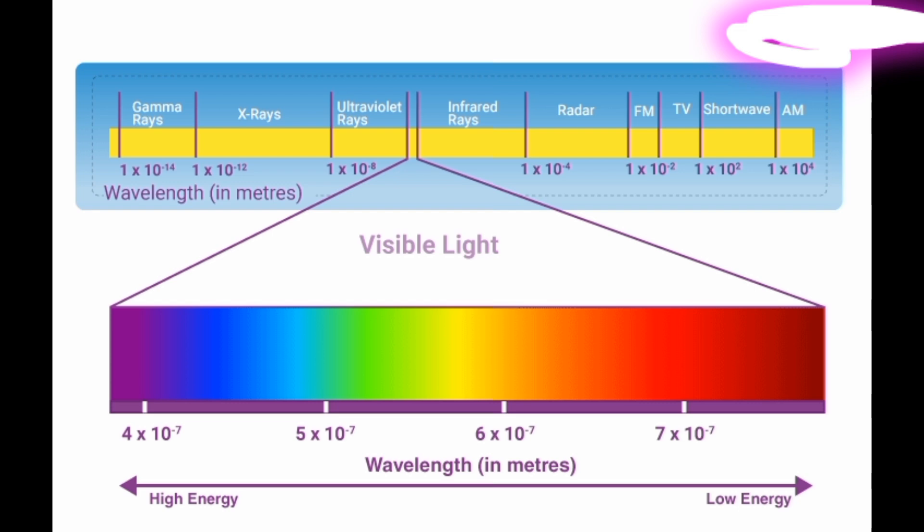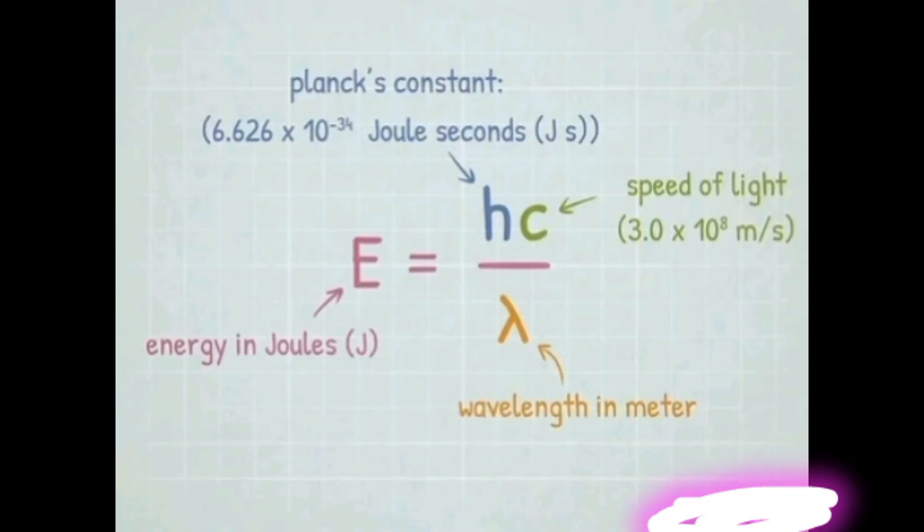These experiments also help us to know the wavelength of every visible light we have. Using the formula, lambda equals H times C all over E. Where lambda is wavelength, H is Planck's constant, C is the speed of light in vacuum, and E is band gap energy, eV converted in joules.